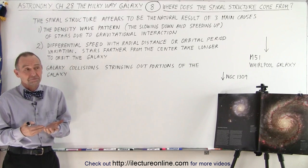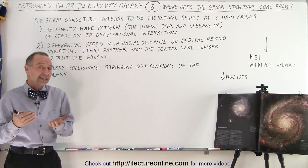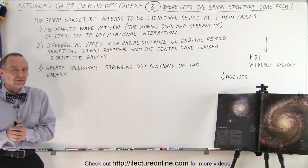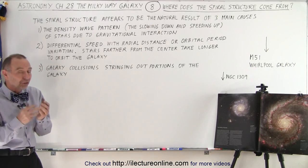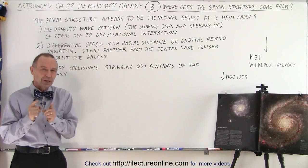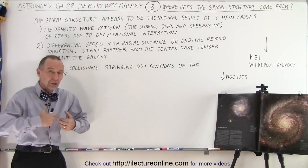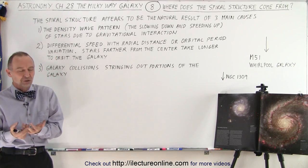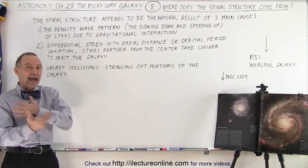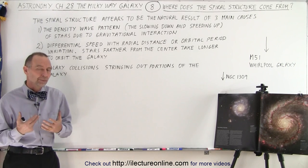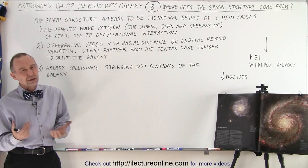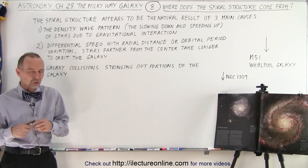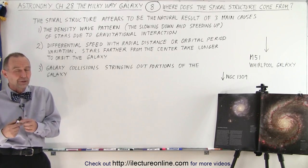It turns out, not surprisingly, that that's a natural result of certain conditions within the galaxy. And there's three main conditions to which we can point that will automatically result in a spiral structure. Now typically spiral galaxies have some rotational motion to them. Without rotational motion you're less likely to have a spiral structure, so rotational motion is definitely part of it.